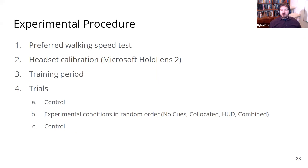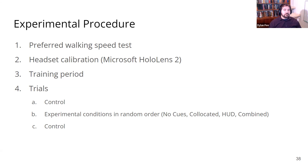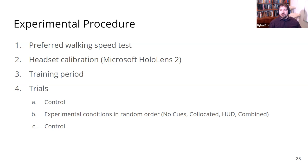Our experimental procedure started with a preferred walking speed test — we cleared all obstacles out of the way and tested preferred walking speed to give us a baseline. We calibrated the Microsoft HoloLens 2 to each participant, then had a training period where participants tried out each type of cue several times until they understood how each one worked. Then we held our trials: control trials at the start and end to measure effects without the HoloLens, and the experimental conditions — no cues, world-locked, heads-up, and combined — in between in a random order.